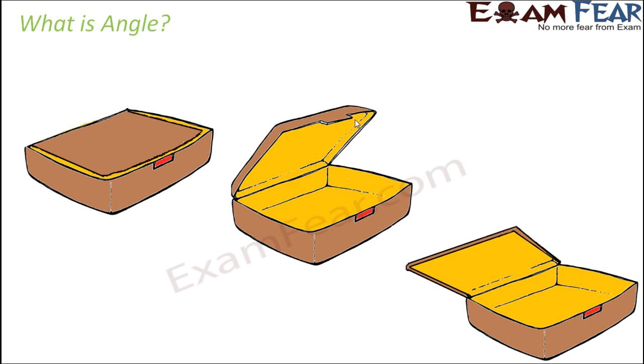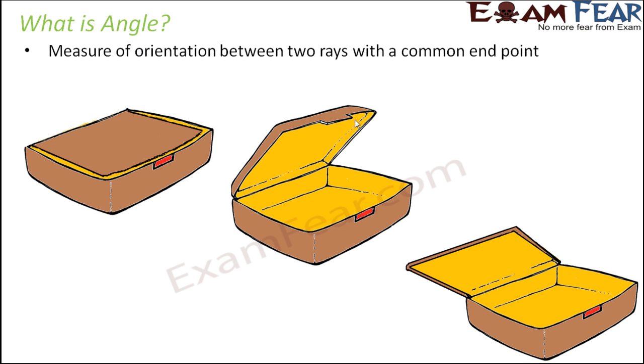Now the next geometrical element is angle. What do you see on the screen? You see a box which is initially closed and then which is gradually getting opened and then it is totally opened. How does this relate to angle? Because angle is nothing but measure of orientation between two rays with a common end point. When the lid is closed, the lid and the box are oriented along each other. When you gradually start opening it, there is some sort of orientation between these two rays and this orientation is angle.